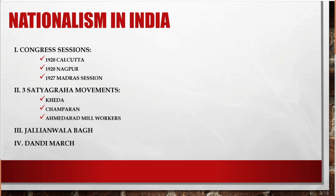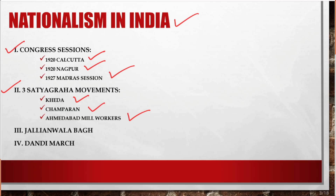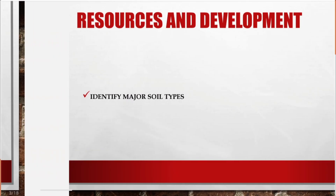The first topic is from History, which is Nationalism in India. Questions can come on Congress sessions like 1920 Kolkata, 1920 Nagpur, and 1927 Madras session. Then, three Satyagraha movements: Kheda, Champaran, and Ahmedabad mill workers. Then Jallianwala Bagh, and the fourth one is Dandi March.